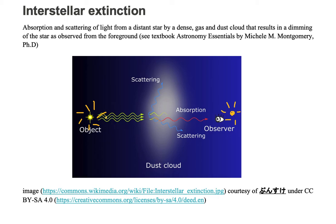Now we're looking at the distant starlight coming towards the observer. Since the light that we're observing is between the stars, it's called interstellar.